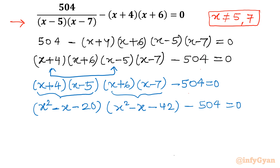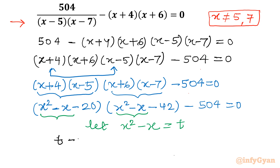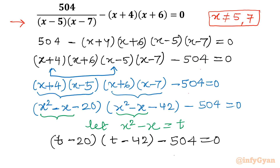Now you can see substitution is possible. Both products share x² minus x. So let us consider x² minus x equal to t. This equation will convert into (t minus 20)(t minus 42) minus 504 equal to 0. Remember our substitution is x² minus x equals t — we will put it back at last.